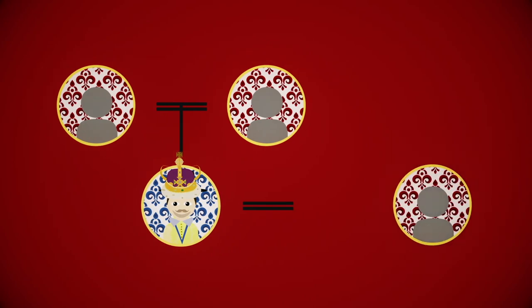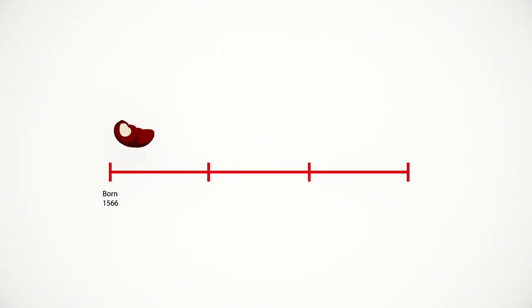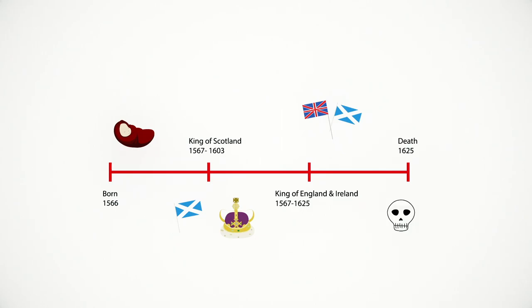At 15, he married Anne of Denmark. James was a Scottish king and ruled Scotland from 1567 as James VI, and then King of England and Ireland as James I from 1603 until his death in 1625.